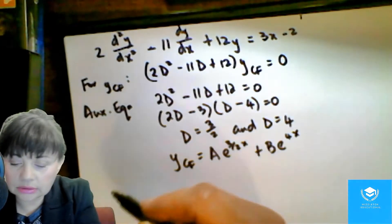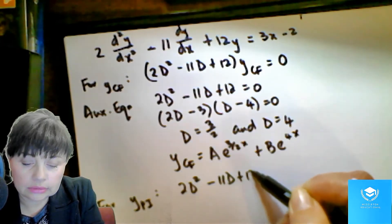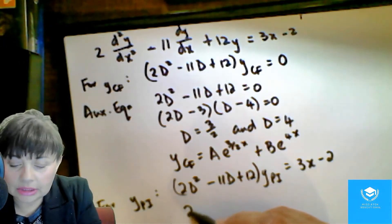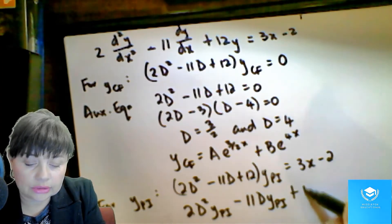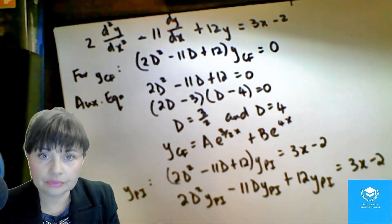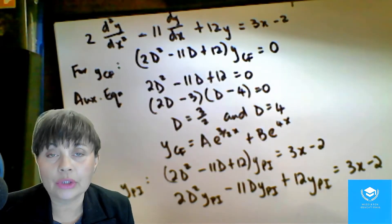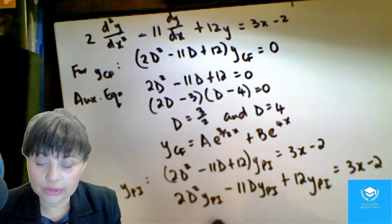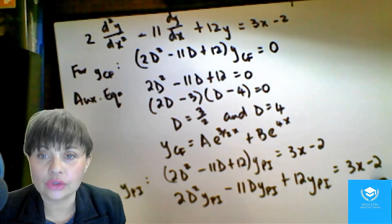So that's our complementary function. Now for our particular integral, y_pi has to equal 3x minus 2. So that means that your second derivative acting on your particular integral and your first derivative acting on your particular integral has to equal 3x minus 2. So what you're looking for is a trial function for your particular integral so that when you find your first derivative and your second derivative and substitute into this equation, your equation has to balance — everything on your left-hand side has to simplify down to 3x minus 2.